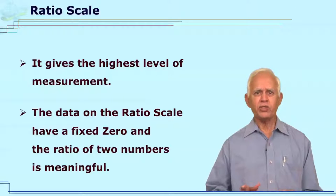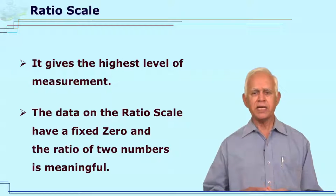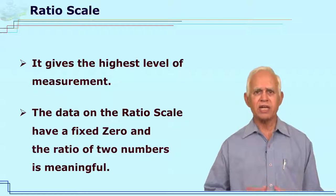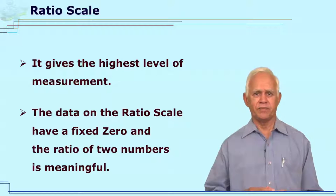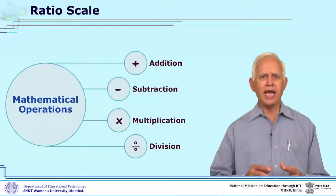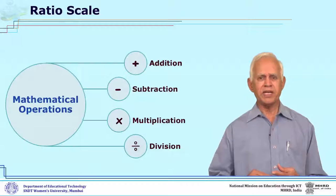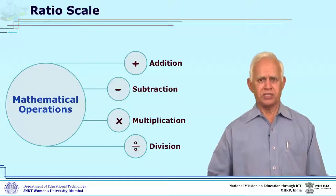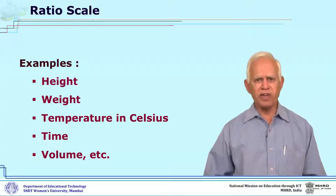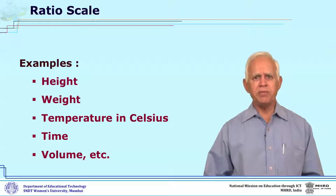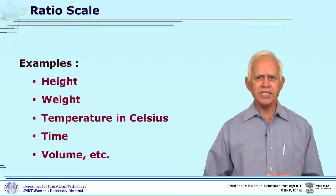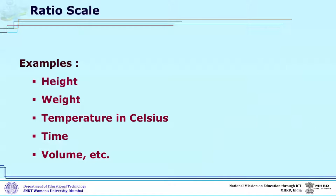The last scale of measurement is the ratio scale. This measurement is the highest. Now in this measurement, there is a fixed zero and intervals are of equal length. In this particular one, the measurement which a researcher gets will be the highest measurement, and with this one can do addition, subtraction, multiplication, and division operations. The different examples of variables which will have the measurement on the ratio scale are height, weight, temperature in degree centigrade, time, volume, etc.